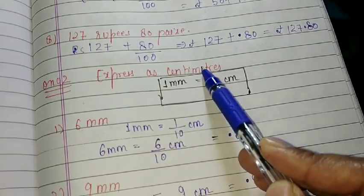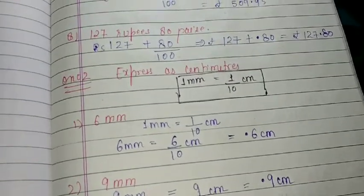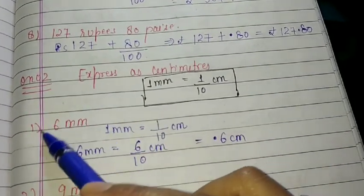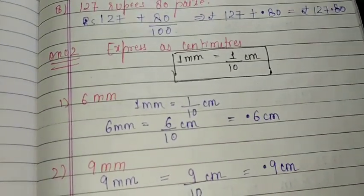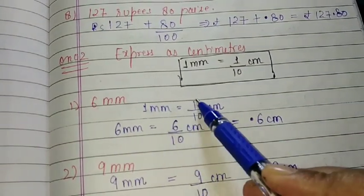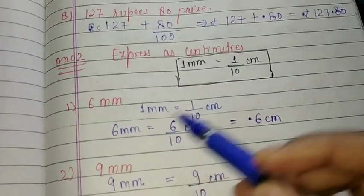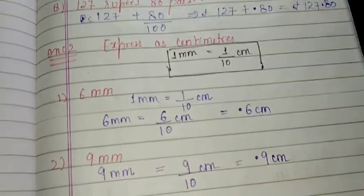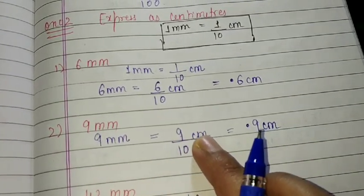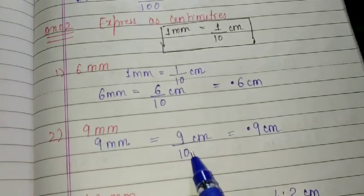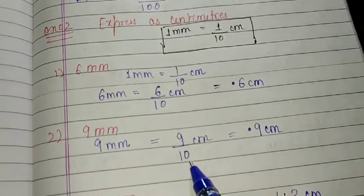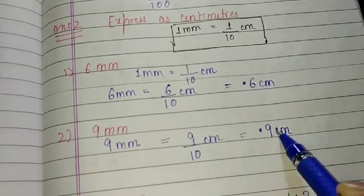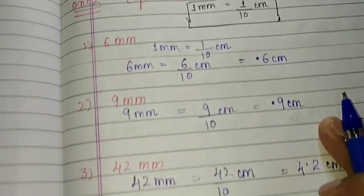Question number 2: express as centimeter — we have the following numbers in millimeter and we have to convert into centimeter. 1 millimeter is equal to 1 over 10 centimeter, so we divide by 10. 6 millimeter is equal to 6 over 10 centimeter — before 1 digit I put point. 9 millimeter is equal to 9 over 10 centimeter — 1 zero is there downside, so I put point before 1 number only. 9 millimeter is equal to 0.9 centimeter.